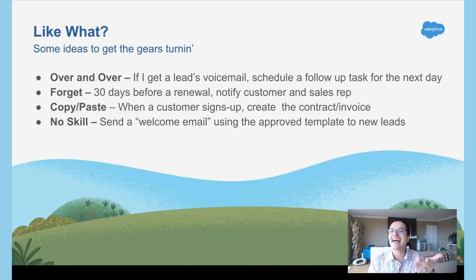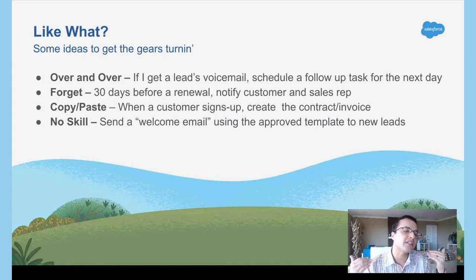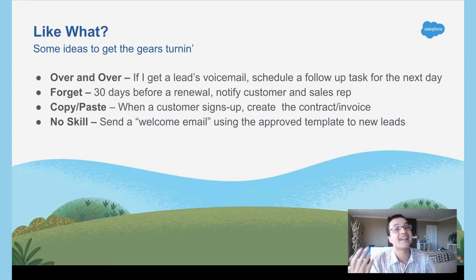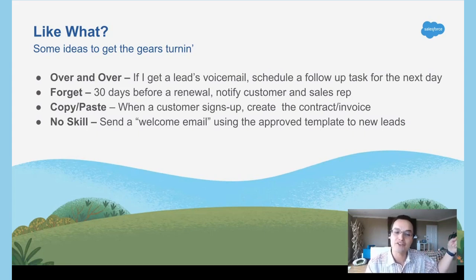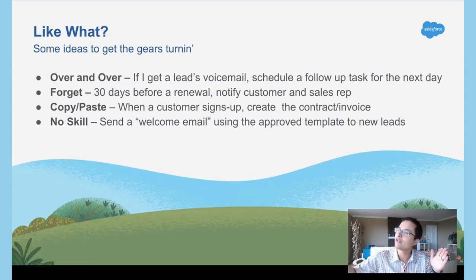Think about things like logging a voicemail and scheduling a follow-up call. That's something people do all the time, and yet a lot of customers make it really manual. Let me show you how to automate logging a voicemail and scheduling the follow-up task. Also, think about time-dependent tasks — 30 days before renewal, 180 days after they signed up. Automation rules are great for that.